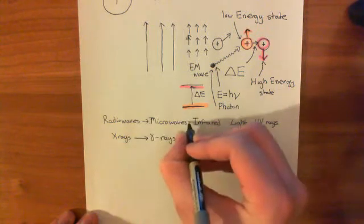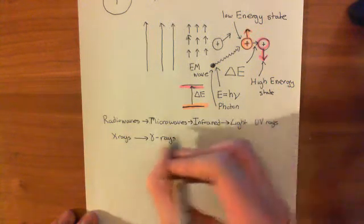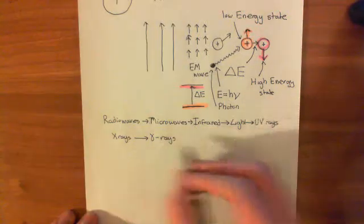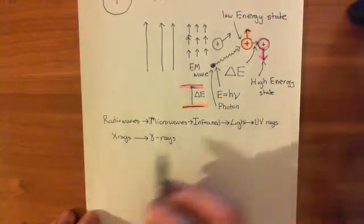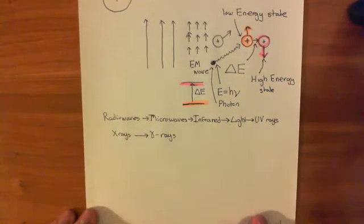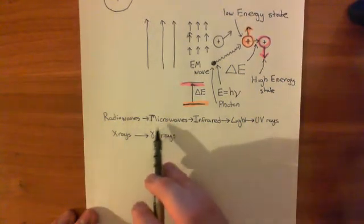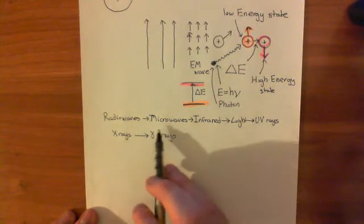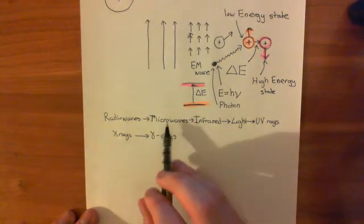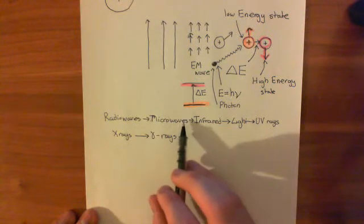As frequency gets bigger, the energy delivered by these photons gets larger, and they become more and more dangerous. Radio waves aren't very dangerous. Microwaves are dangerous in certain contexts — mobile phones emit microwaves, and obviously a microwave oven wouldn't end nicely for you.